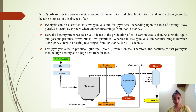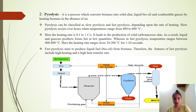In fast pyrolysis, temperature ranges between 400 to 800 degrees Celsius, with a heating rate of 10 to 200 degrees Celsius per second for 1 to 10 seconds. Fast pyrolysis aims to produce liquid fuel, that is bio-oil, from biomass. The features of fast pyrolysis include high heating rate and high heat transfer rate.